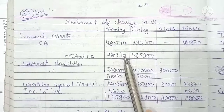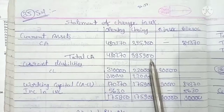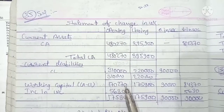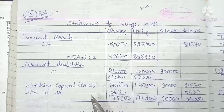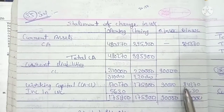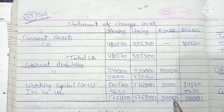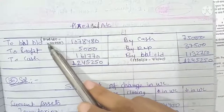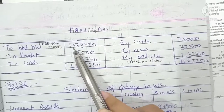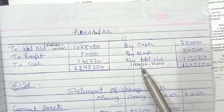Now we take out working capital: current assets minus current liabilities. Opening: 4,80,270 minus 3,10,000 equals 1,70,270. Closing: 3,95,900 minus 2,20,000 equals 1,75,900. The increase in working capital comes to 5,630. Opening year depreciation was 90,000, so we subtract from fixed assets 10,78,480. Closing balance of fixed assets in 2015 is 12,30,250.